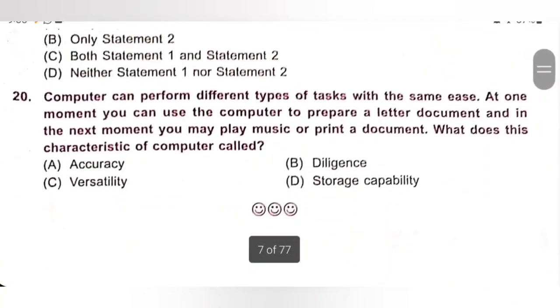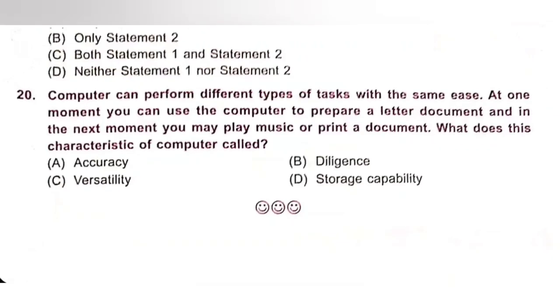Last one. Computer can perform different types of tasks with the same ease. At one moment, you can use the computer to prepare a letter document, and in the next moment, you may play music or print a document. What does this characteristic of computer called? A. Accuracy. B. Diligence. C. Versatility. D. Storage capability. So, this characteristic of computer is called versatility. Option C is the correct answer.